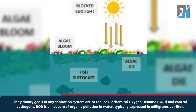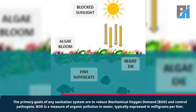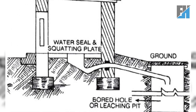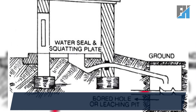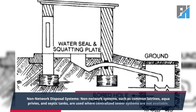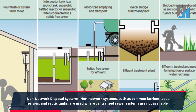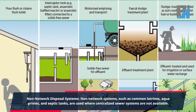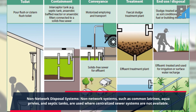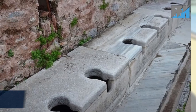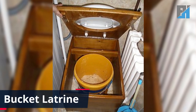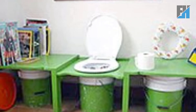BOD is a measure of organic pollution in water, typically expressed in milligrams per liter. Non-network disposal systems — such as common latrines, aqua privies, and septic tanks — are used where centralized sewer systems are not available.